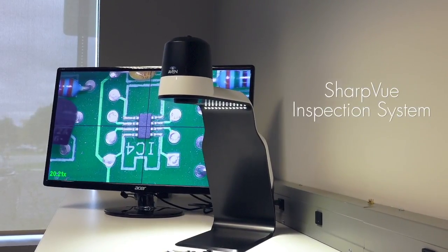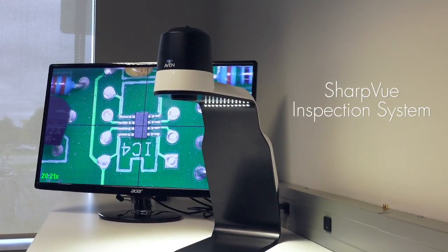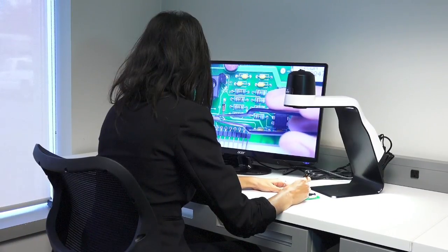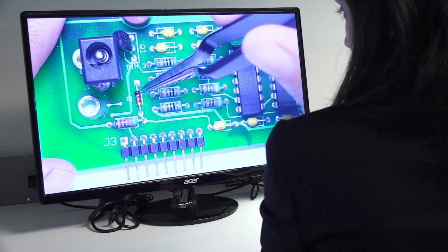Aven's SharpView system was developed with the operator's comfort in mind. This innovative inspection system reduces neck and eye strain and helps increase productivity.